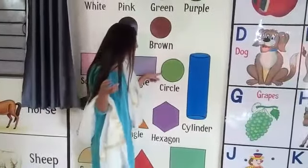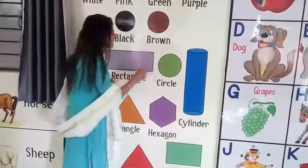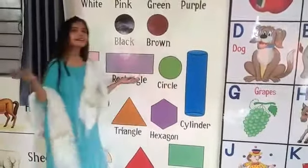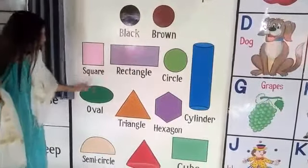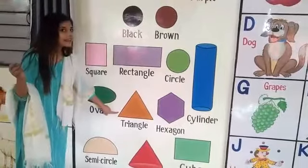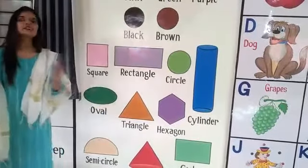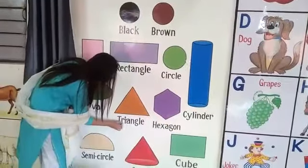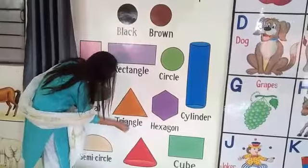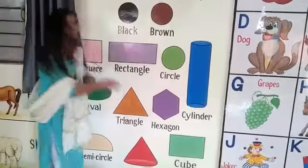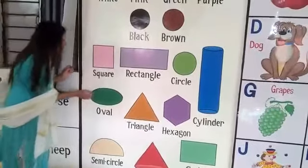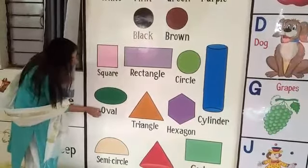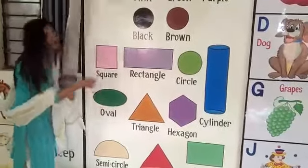And which shape is this? This is a circle. C-I-R-C-L-E. Circle. And students, tell me which shape is this? This is a triangle. Very good. And what is the spelling of triangle? T-R-I-A-N-G-L-E. Triangle. And students, which shape is this? This is oval. O-V-A-L. Oval.